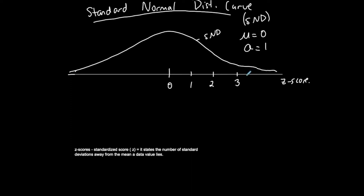Typically we stay around 3. One standard deviation below the mean — 0 minus 1 — is negative 1. Two standard deviations below the mean represents negative 2. Three standard deviations below the mean is negative 3, and I can go past that.